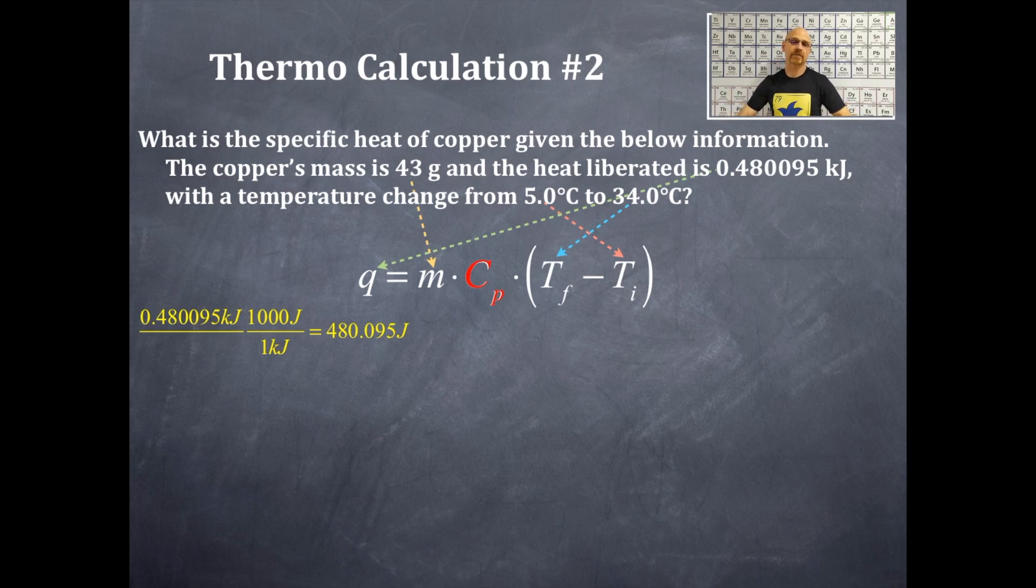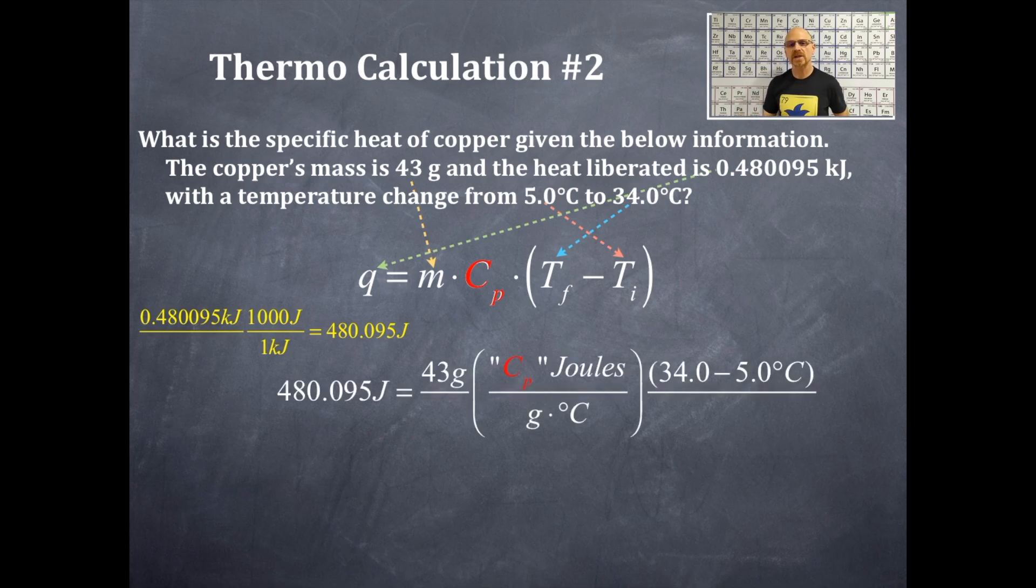Now we're going to plug in the rest of the information and solve for the specific heat capacity. So this is what I've done right here. I've substituted in into that equation of Q equals MC delta T and the Q term, the heat term, is 480.095 joules.